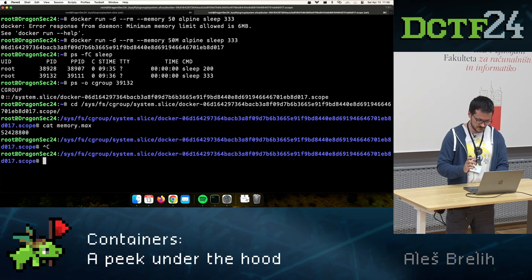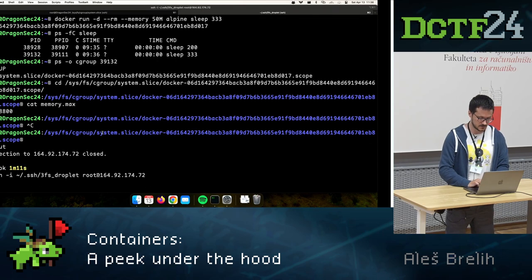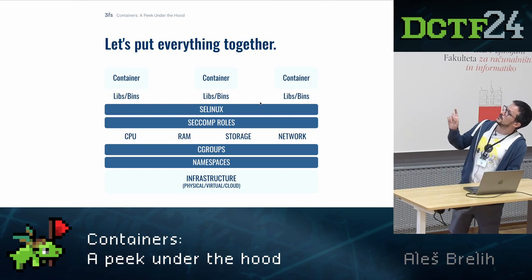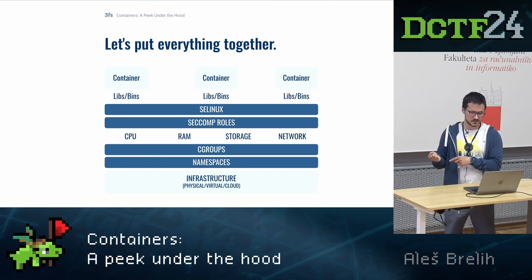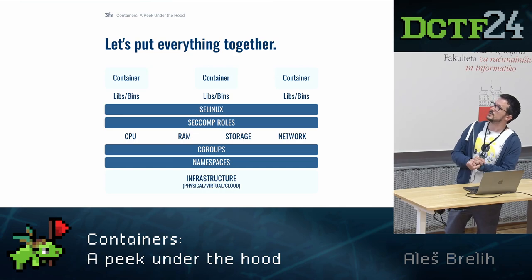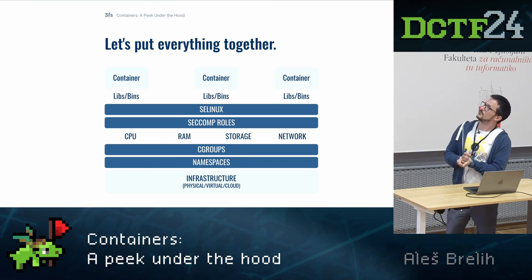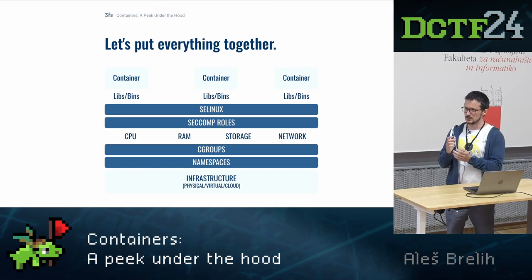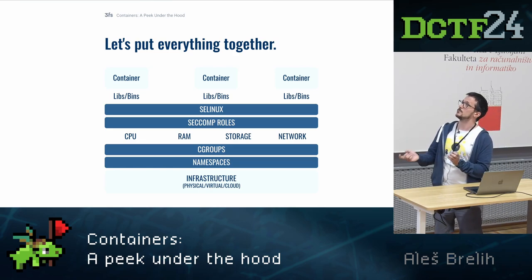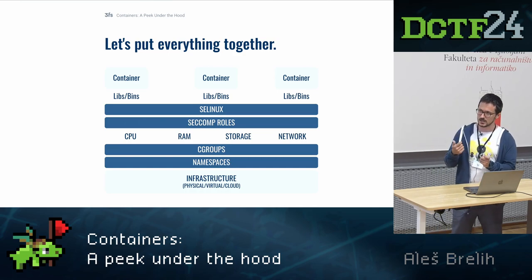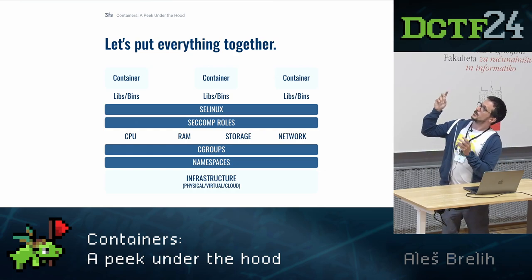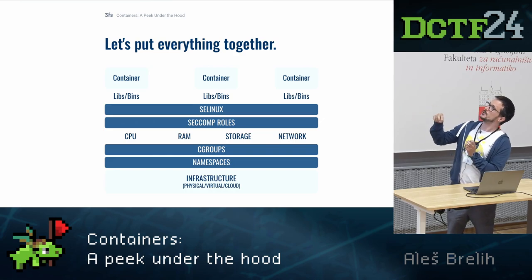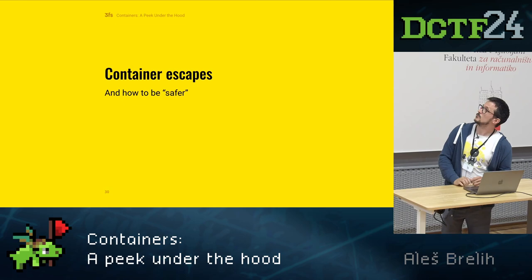Let's put everything together. You have namespaces to isolate global resources, cgroups to limit how much resources they can take, and two more things I didn't mention: seccomp profiles — rules that restrict which system calls can be executed by the process — and SELinux, which is mandatory access control that limits which files you can access. Then you have user libs and bins provided by the Docker image. That gives you a container.